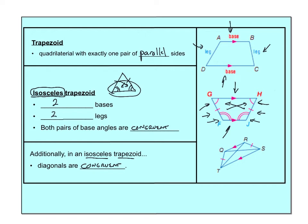So a trapezoid has one pair of parallel sides. For an isosceles trapezoid, you have two parallel bases and two congruent legs — much like an isosceles triangle has two congruent sides. And the diagonals end up being congruent as a result.